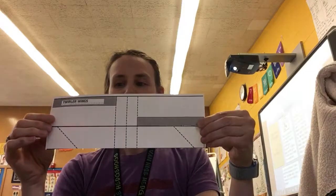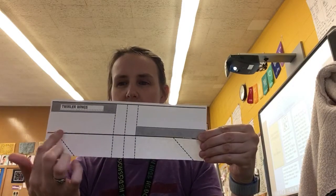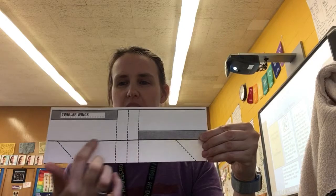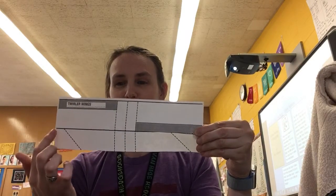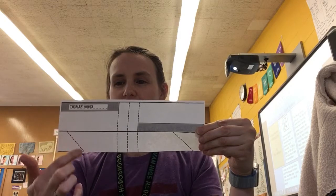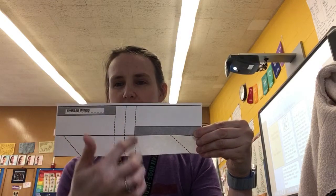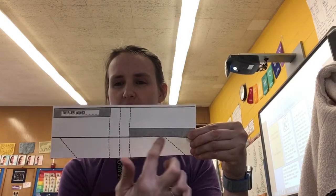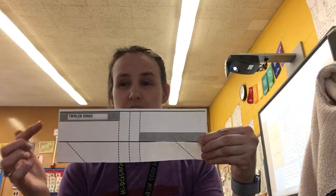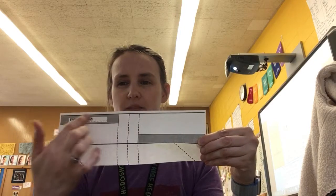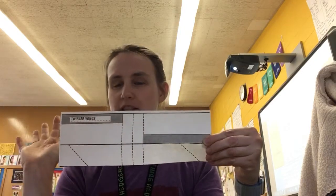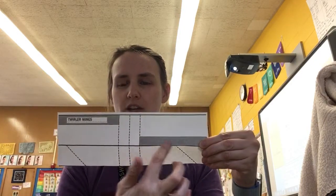This particular one is going to require me to cut across this thick line in the middle here. As you may know, the dotted lines are for folding, the thick black line is for cutting, and also any other black lines are for cutting. I'm going to need to cut along here and also here. This grayed out part means that it gets thrown away.